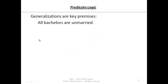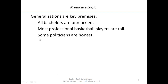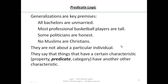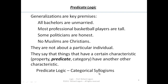When we're looking at predicate logic, generalizations are key premises — things like 'all bachelors are unmarried,' 'most professional basketball players are tall,' 'some politicians are honest,' 'no Muslims are Christians.' These kinds of generalizations in predicate logic are not about a particular individual. They're about a whole class or category of people that fall under a certain predicate, or that share a property in common. There's some relationship between having a certain characteristic and having a certain other characteristic. Predicate logic — and what are called categorical syllogisms, which are just good patterns of inference — depends on those key generalizations as key premises.